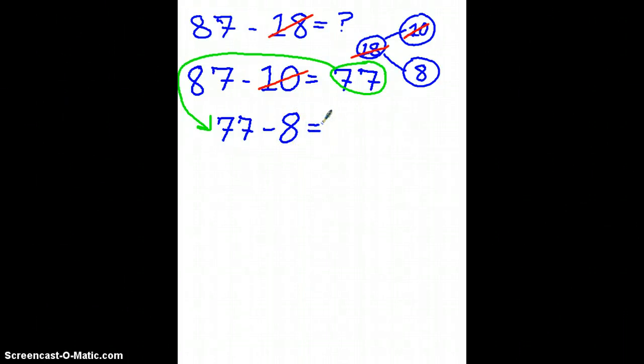7 ones minus 8 ones. Well, I can't do that. I have to regroup in my head. So I'll need to borrow from the tens place, and it's going to give me 10 more ones. So really I have 17 minus 8, which is 9. And since I regrouped, I only have 6 left in the tens place, so I have 69.